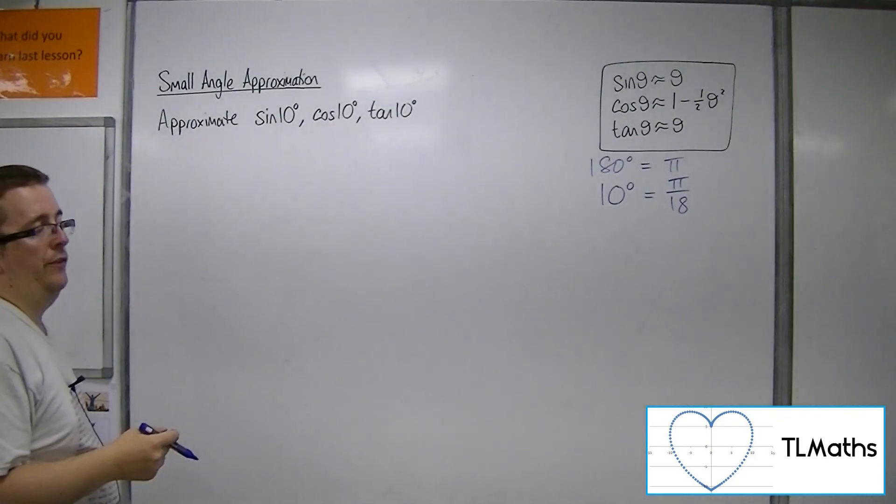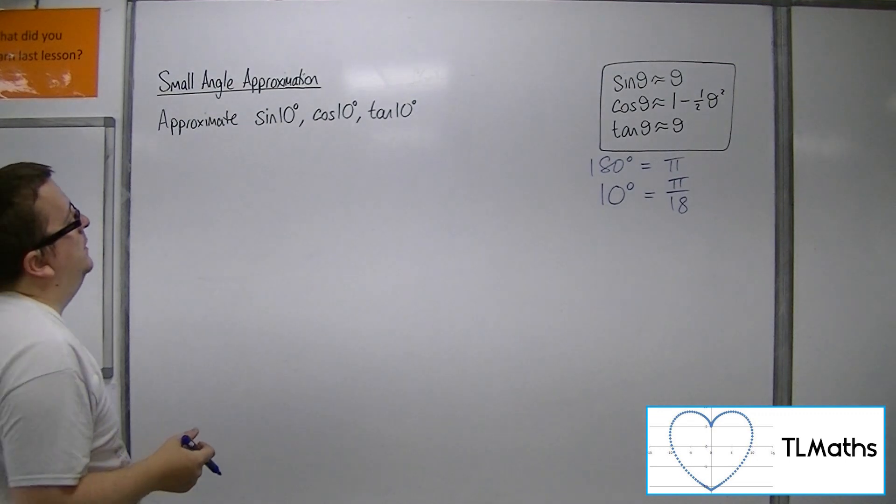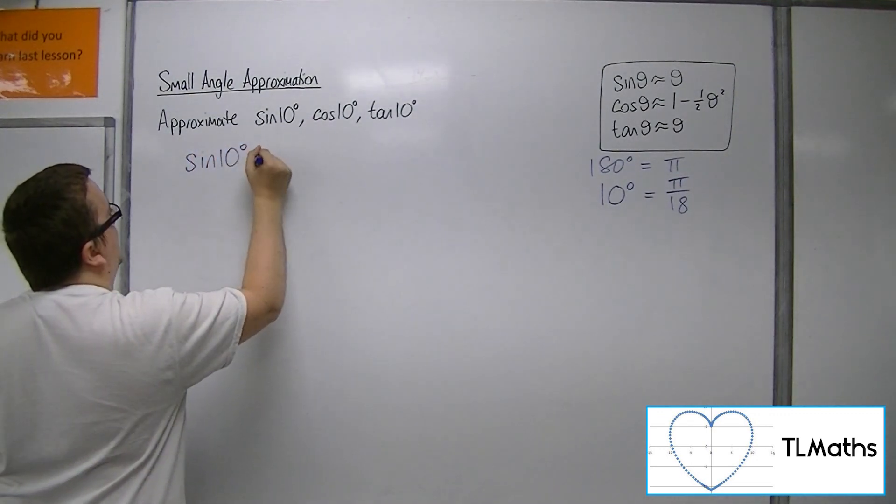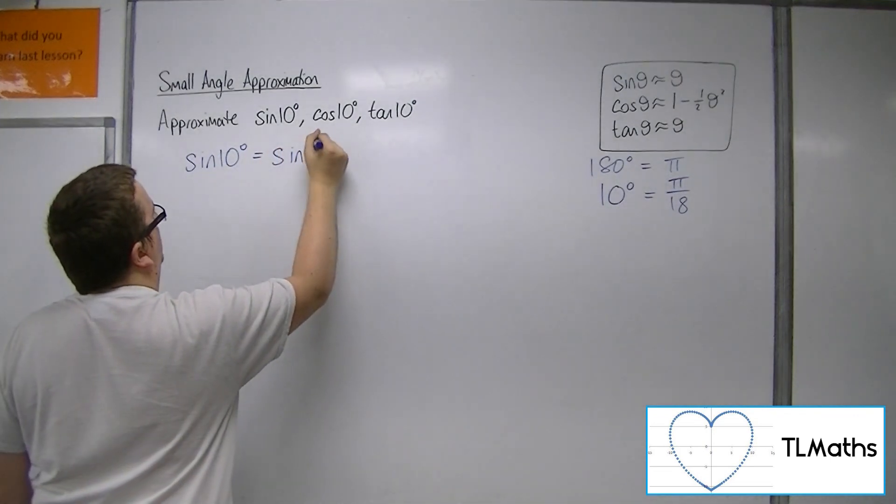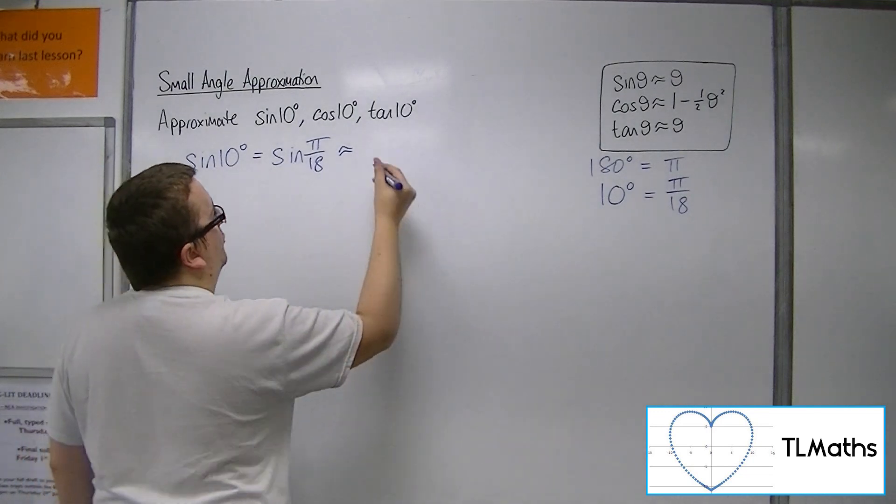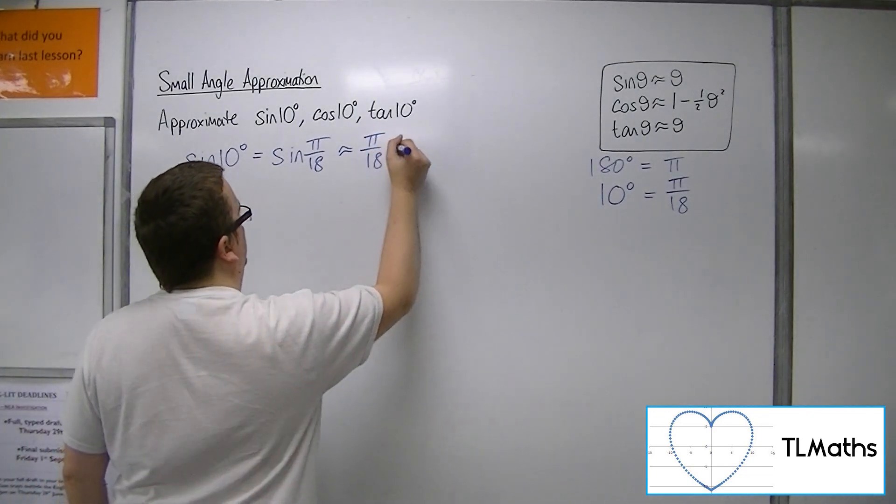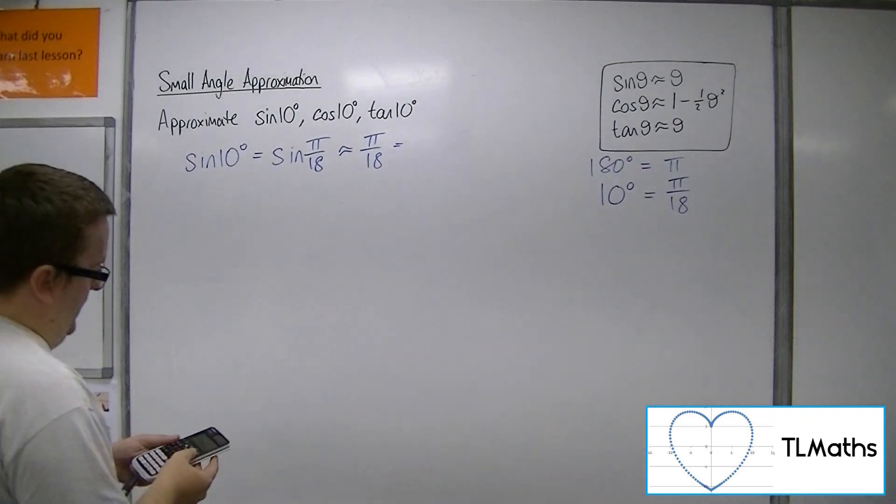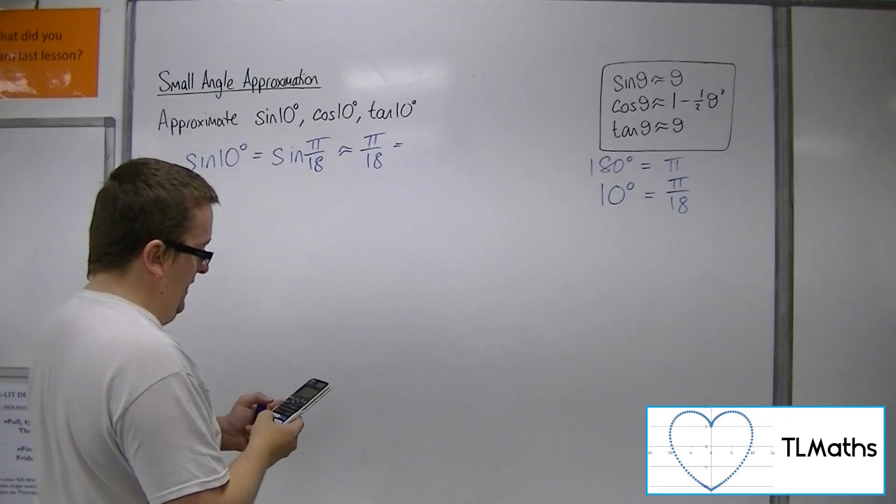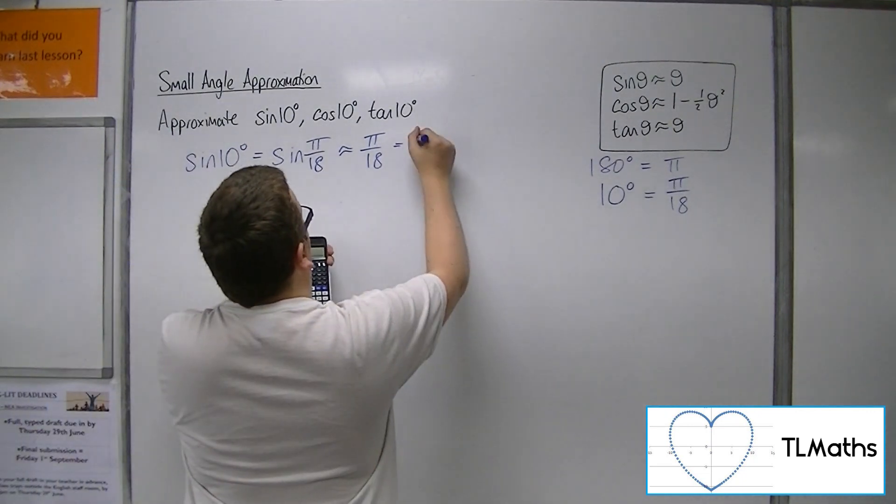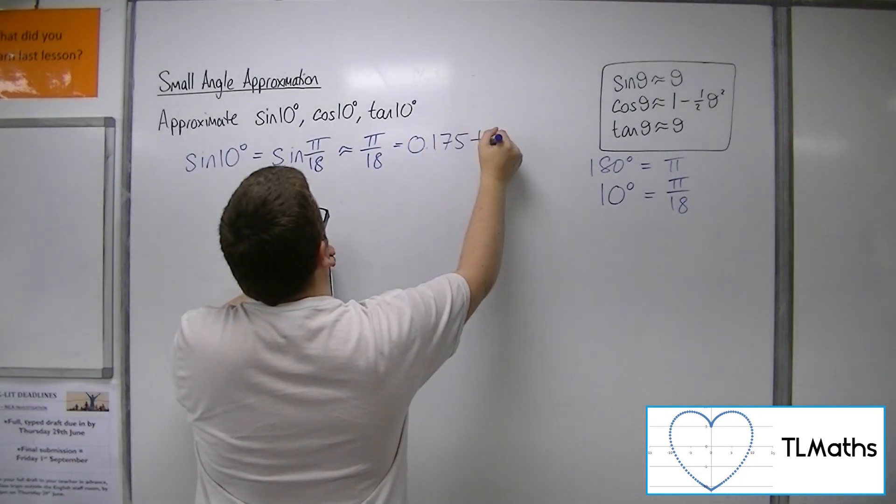So that means that sine of 10 degrees is equal to sine of pi over 18, which we know then is approximately equal to pi over 18. So if we pop that into the calculator, pi over 18 is 0.175 to 3 sig fig.